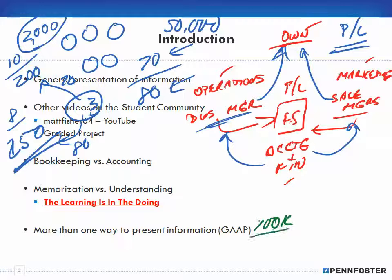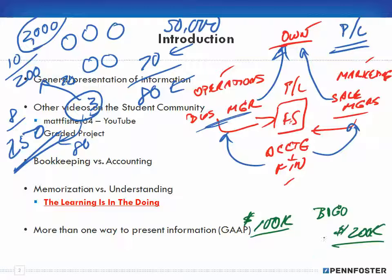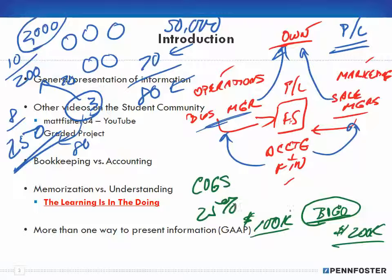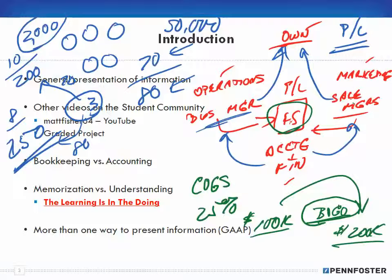The same applies to the sales manager. Say last year for a particular month he had $100,000 in sales, and this year he runs a buy-one-get-one sale and produces $200,000 in sales. He might go to the owner and say this was a great idea because he doubled sales. However, from a financial perspective, even though he had a 100% increase in sales, if his cost of goods sold is only 25%, he actually ends up losing money — and that's all reflected on the financial statements.